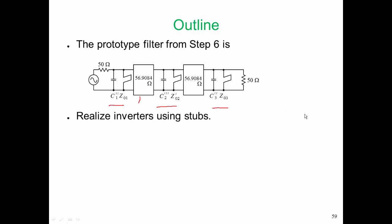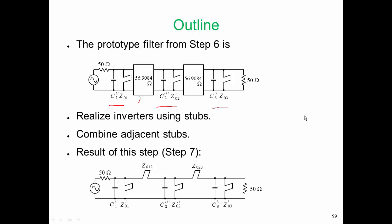Now when we realize these inverters using stubs, we will find that there are stubs that are in parallel, and so we will need to combine those adjacent stubs. The result of this step is shown here. It is a prototype without inverters and only consists of stubs. And as we will see, those pi arrangements of stubs can be realized by a combline section.